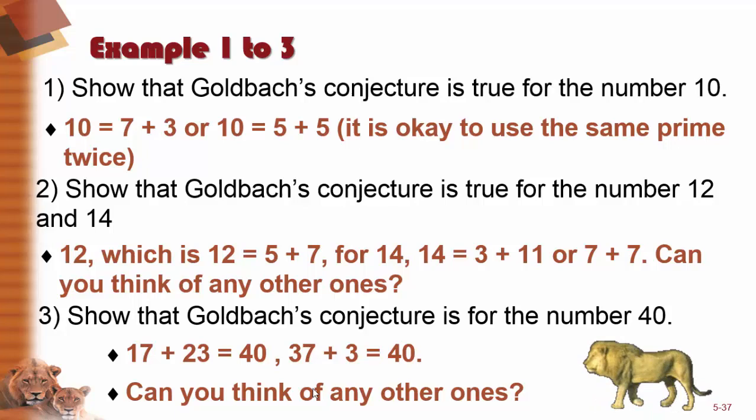A conjecture means an educated guess. Even though we have found pairs of primes to add up to lots and lots of even numbers, nobody has ever proved that this will always work for any even number.